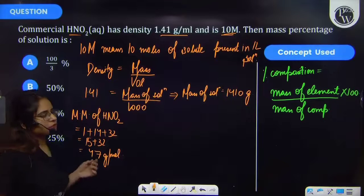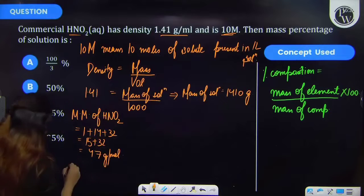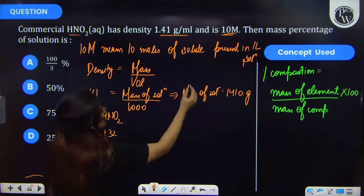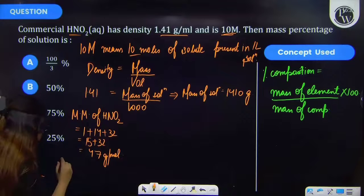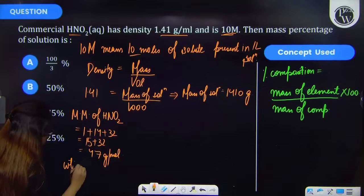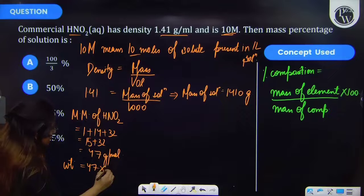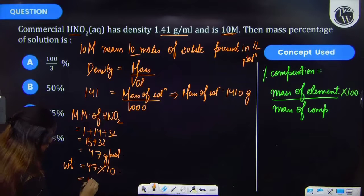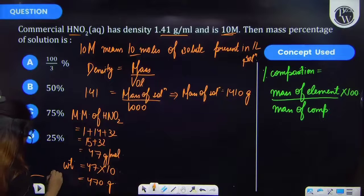Now if I have to find the number of moles, they have been mentioned as 10 moles, and if I have to find the weight, so it will be 47 into number of moles that means 10, and so therefore it will be 470 gram. So this is the weight of solute.